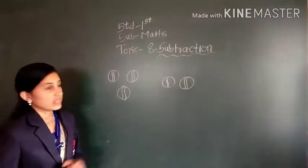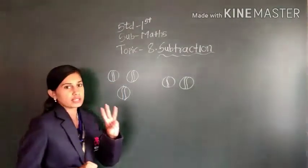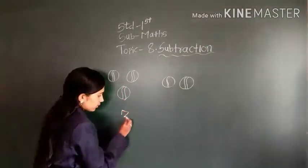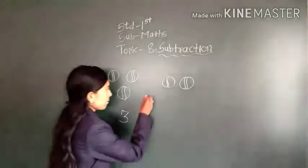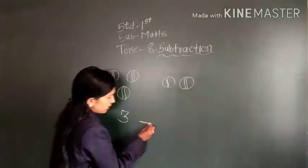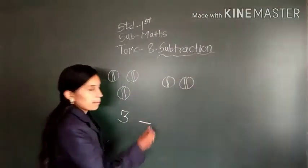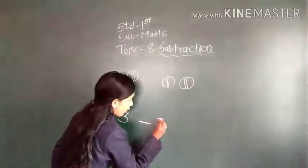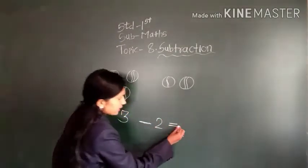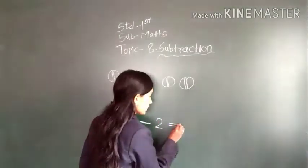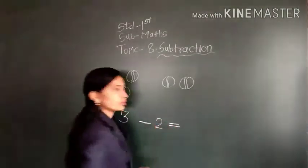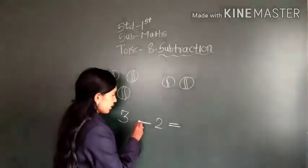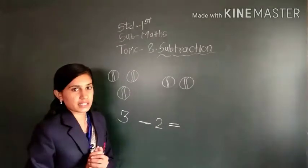See here, there are three balls. One, two, three — three balls. Minus. This is read as minus. Minus two balls. Three balls minus two balls — from three, two balls we have minused.